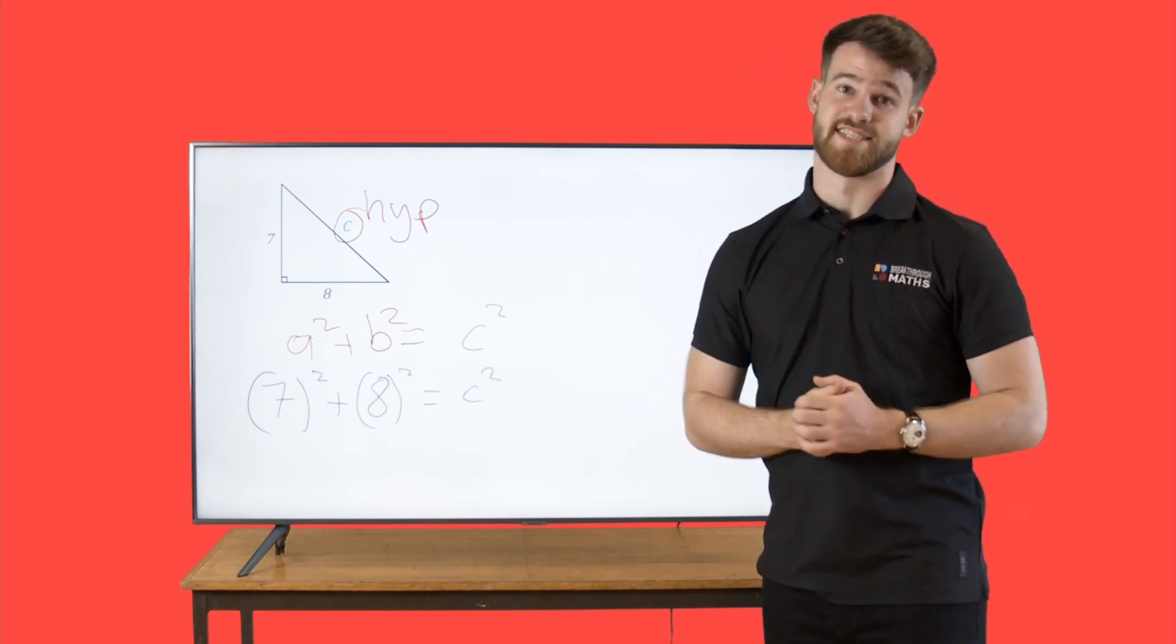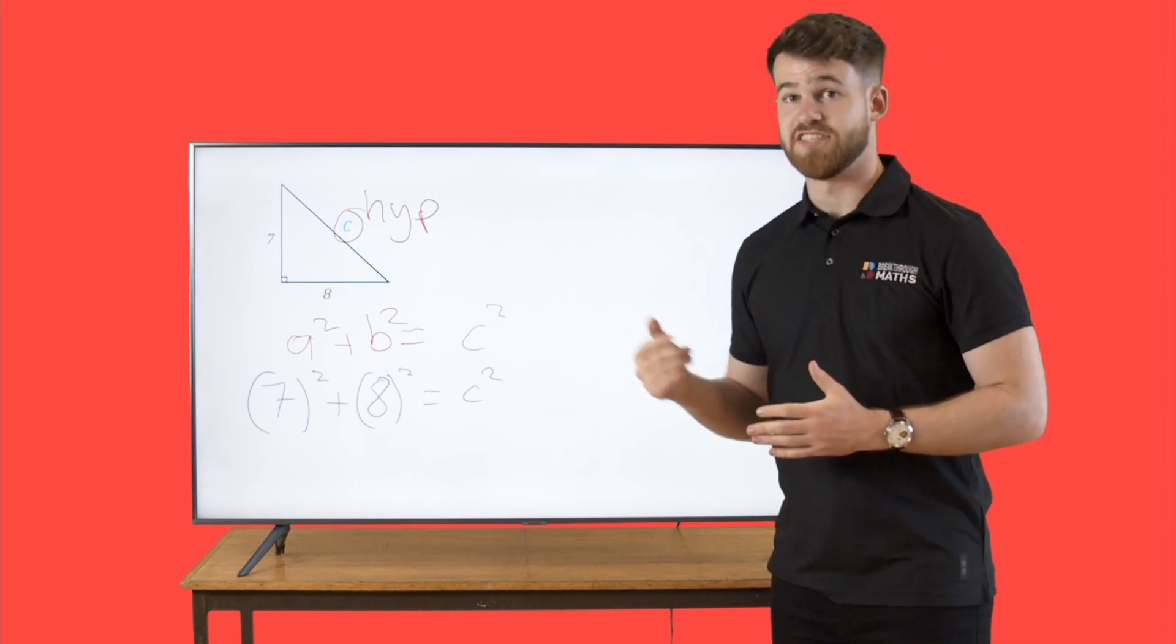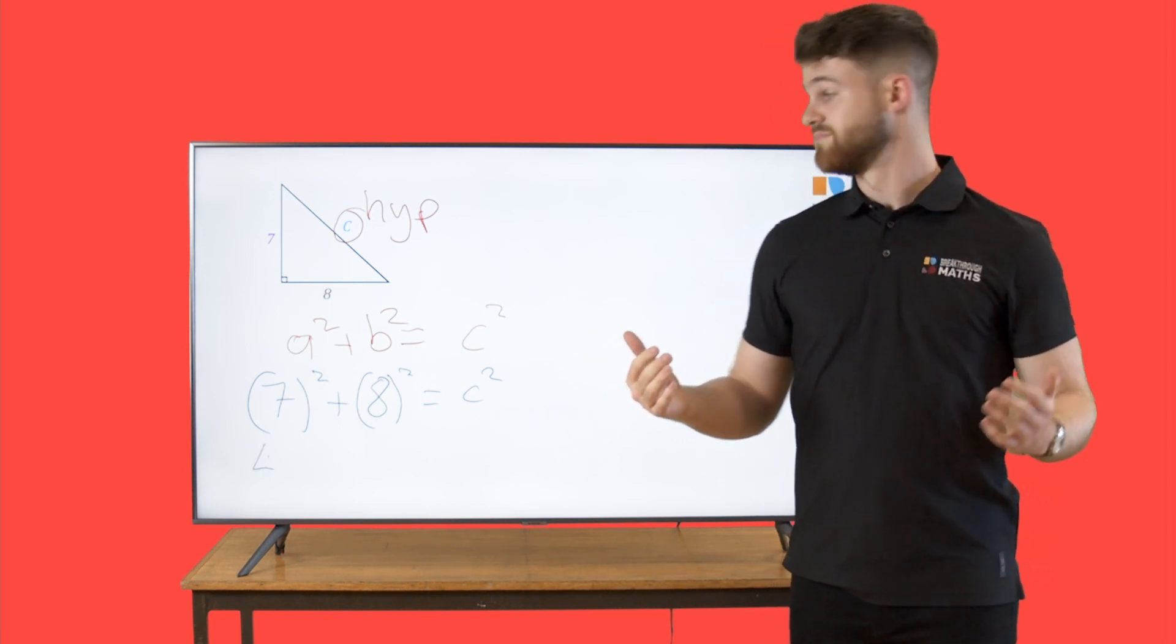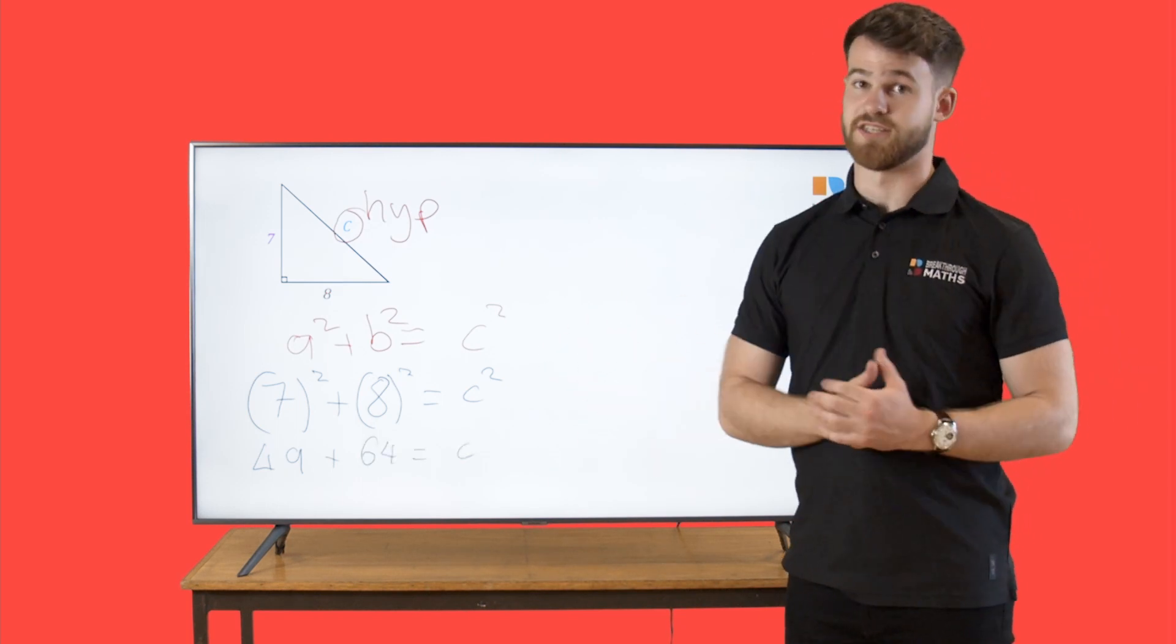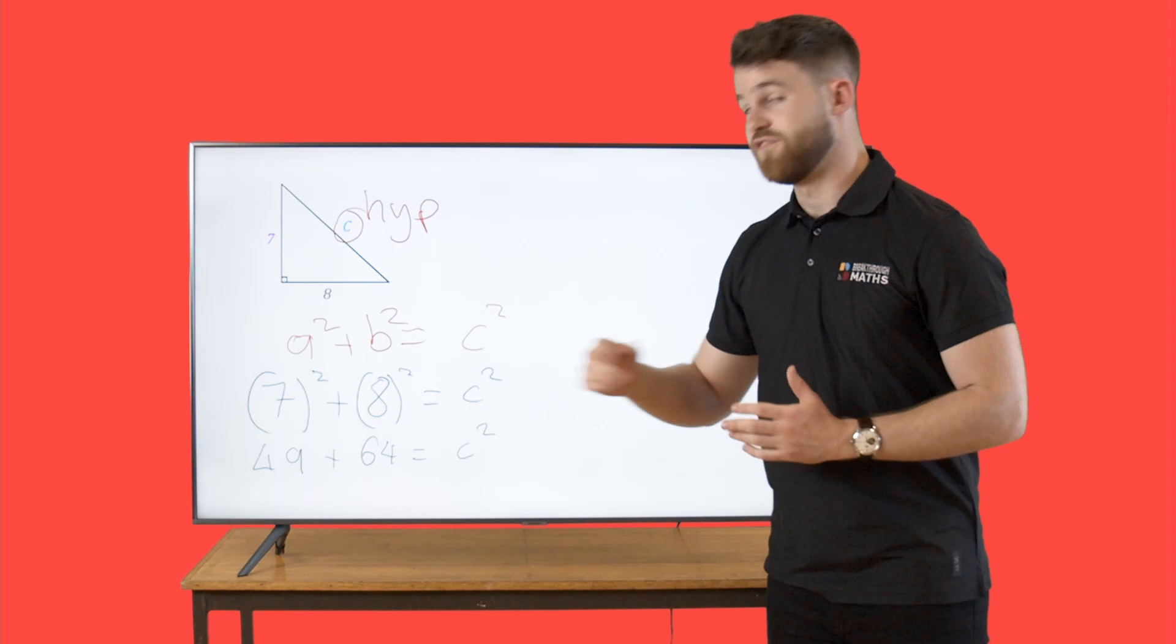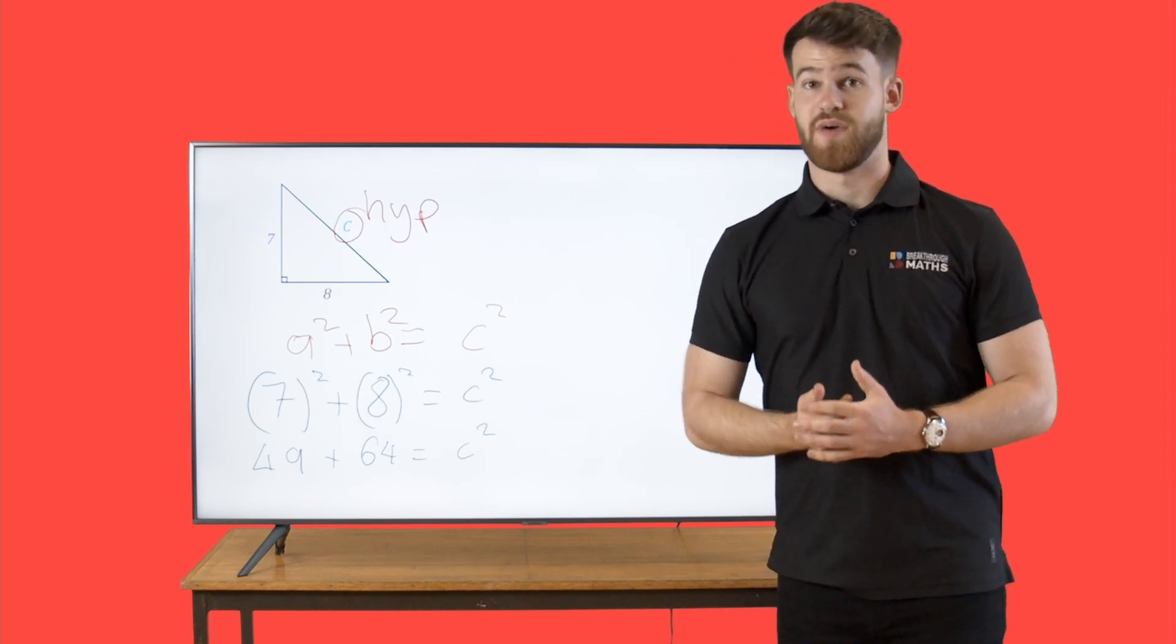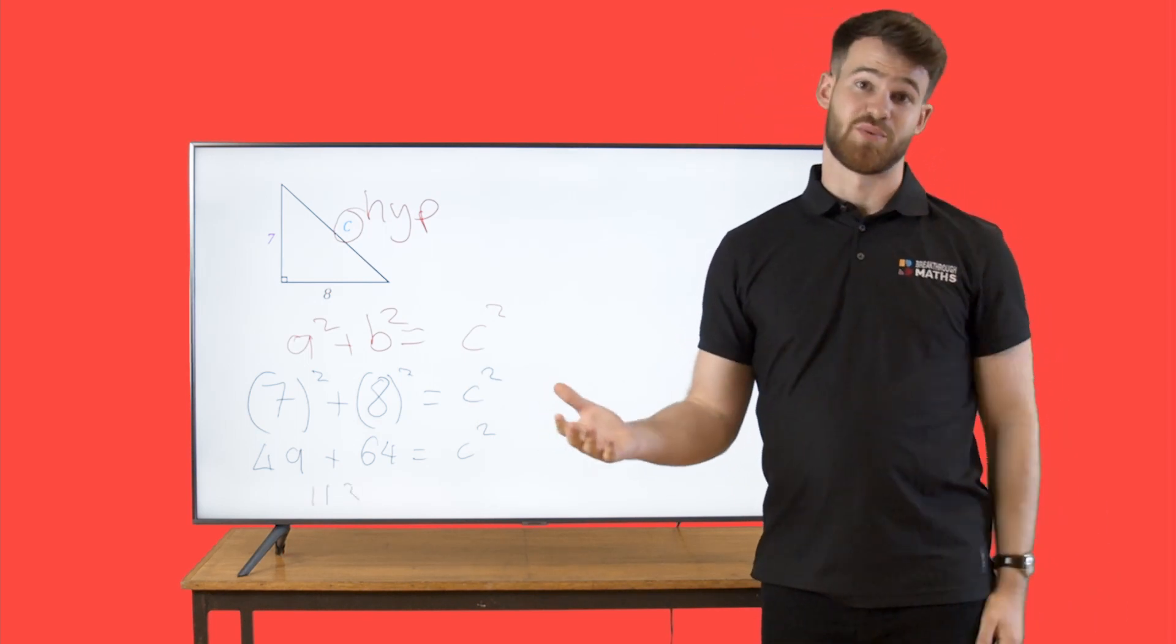Now it's just a case of solving this out for c. 7 squared is going to give us 49 plus 8 squared, which is going to be 64, is equal to c squared. Add this 49 and 64 together and we're going to have 113 is equal to c squared.